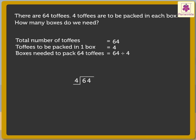We start by comparing the digit in the tens place, that is 6, with 4. Yes, 6 is greater than 4, and therefore we can divide 6 by 4. As we know, 1 times 4 equals 4, so the nearest product is 4. Hence we write 1 above the 6 in the tens column, and write 4 under 6. Subtract 4 from 6; the remainder 2 is written in the tens column.